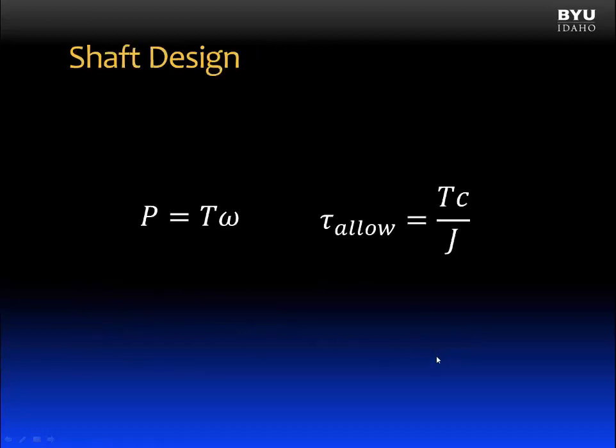For shaft design, we can incorporate these two equations. First, power is equal to the applied torque times the angular velocity, and allowable shear stress is equal to the maximum shear stress, which would be the internal torque times C divided by J. And if we set these two torques equal to each other, we can then solve for the geometric properties C and J. And we're done.